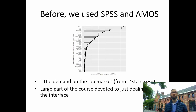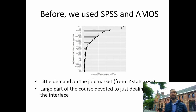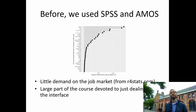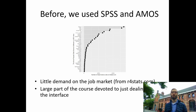There is also relatively little demand for commercial alternatives on the job market. Here is a graph from R for Stats — possibly a biased resource — but as you can see, R is one of the most highly sought after statistical programming languages on the job market. So even if you don't end up becoming a scientist, you will still have learned a marketable job skill. Another challenge of working with commercial software was that the interface was so cumbersome that a large part of this course was just devoted to dealing with the interface, not talking about statistical modeling itself.